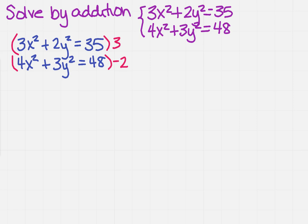Remember, I did that so that I can cancel out the y squared term. So that's going to give me 9x squared plus 6y squared equals 105.